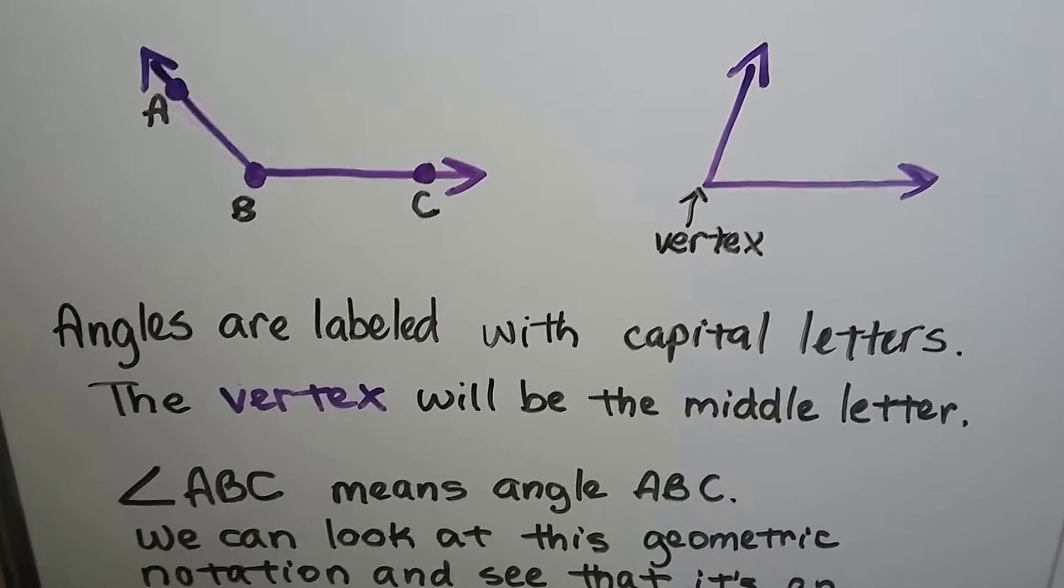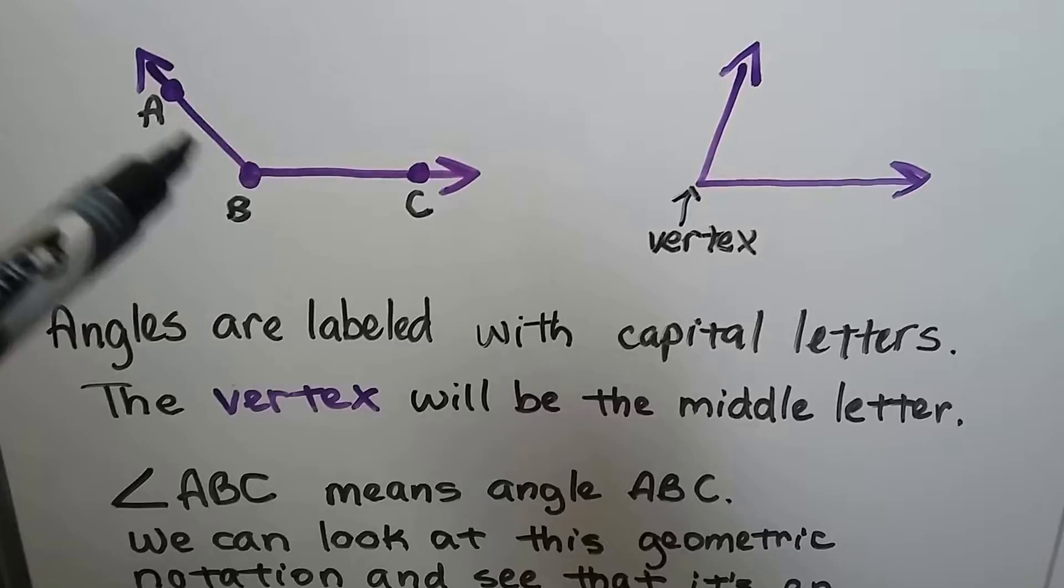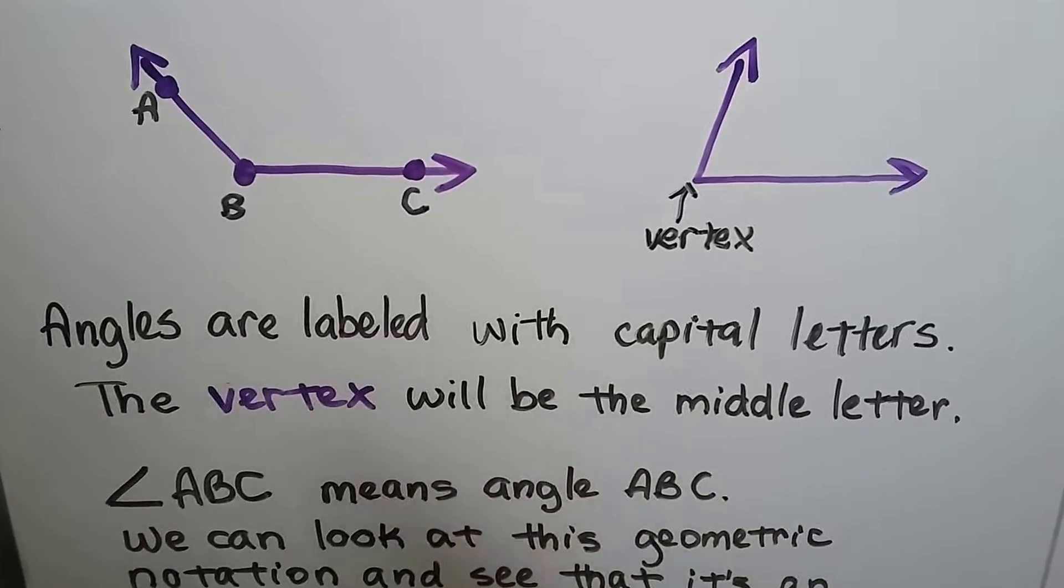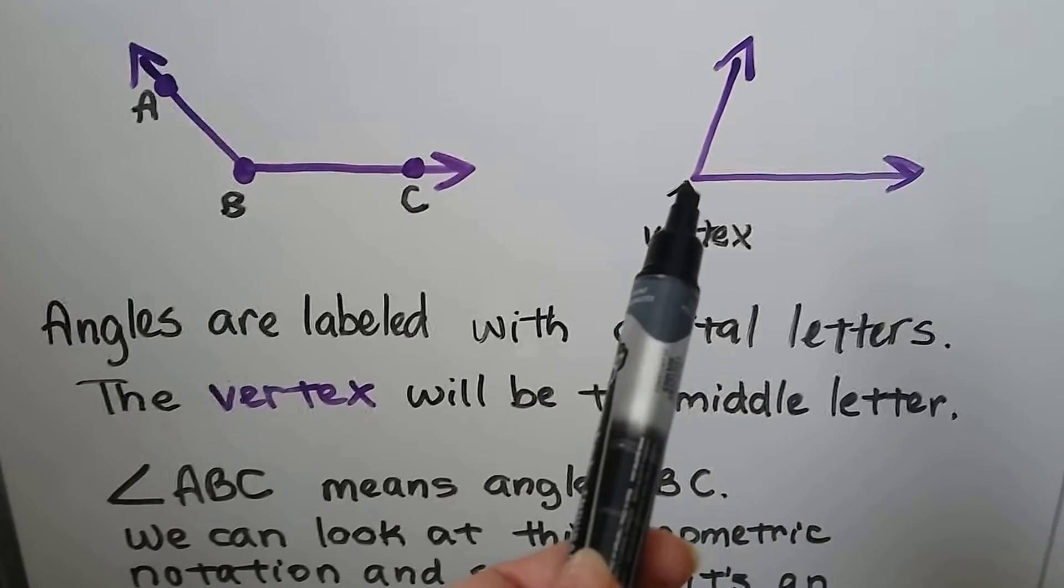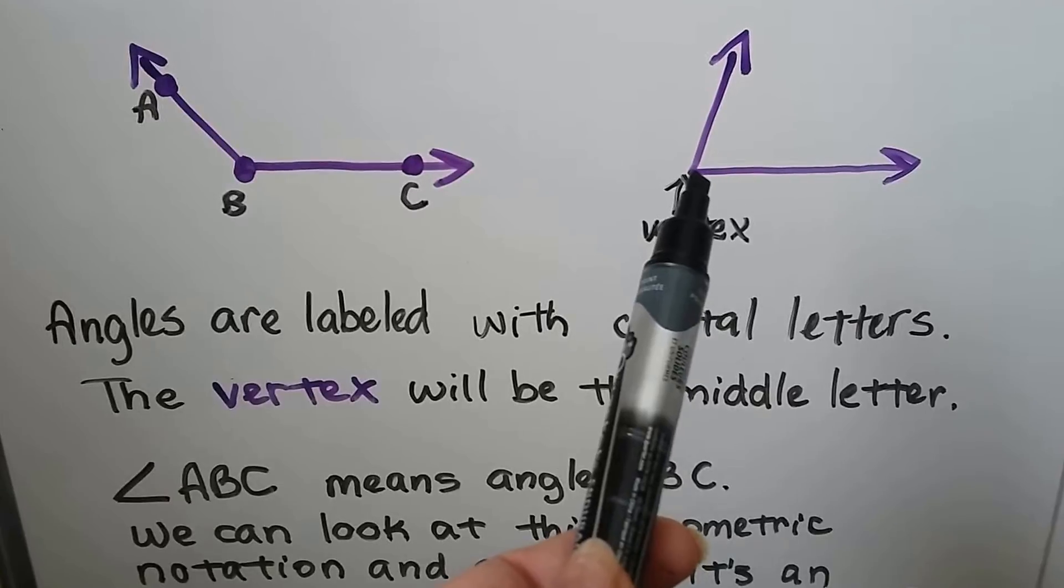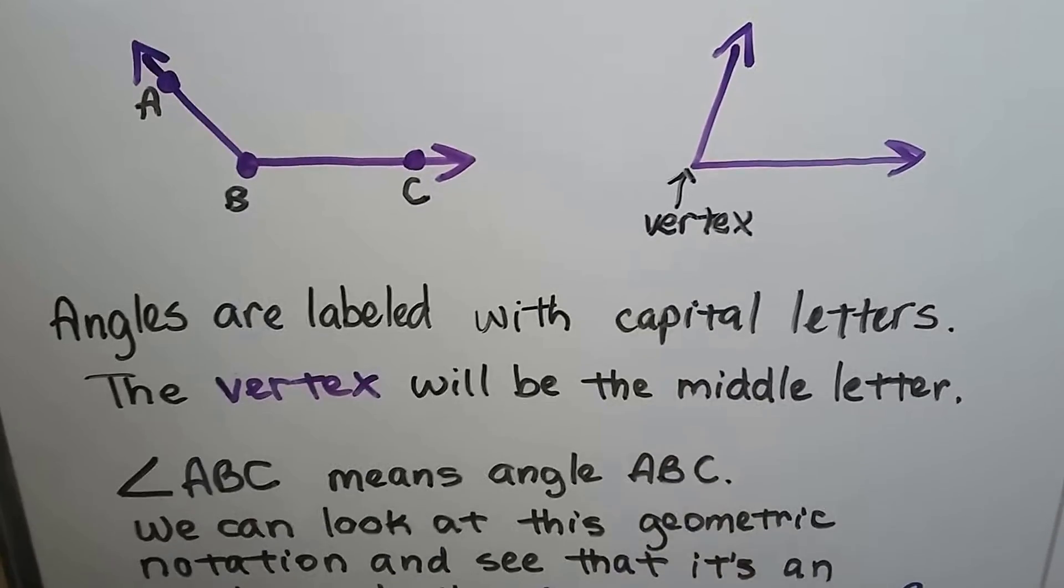Angles are labeled with capital letters. Here's angle A, B, C. And the vertex is the point right here where the two rays meet. So that would be the vertex for that angle B.